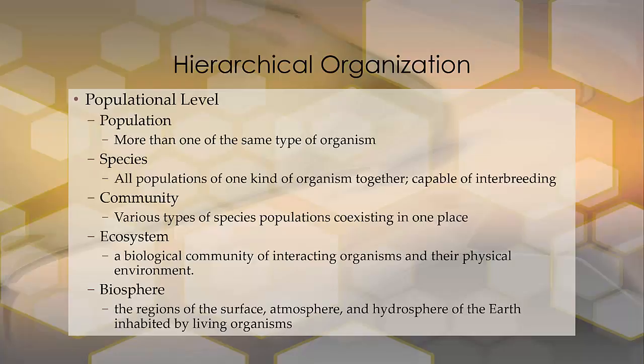Then you have a community, which is the various types of species populations coexisting in one place — kind of like your neighborhood. In my neighborhood, there are various types of humans and dogs and cats and birds and fish. These are all different types of species populations coexisting together.